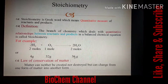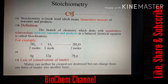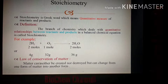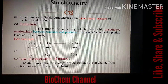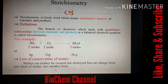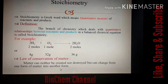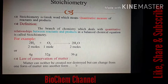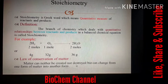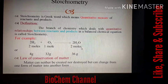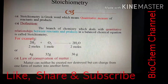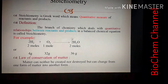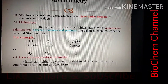In stoichiometry we apply the law of conservation of matter and the law of definite proportions. The law of conservation of matter states that matter can neither be created nor destroyed, but can be converted from one form into another. The amount of reactants equals the amount of products.